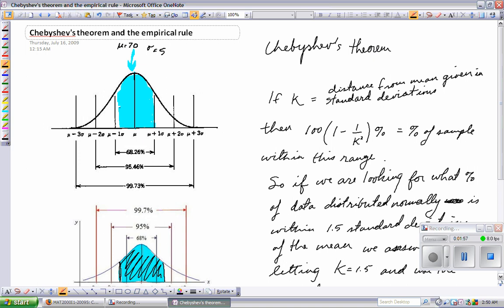We know that the average was 70. One standard deviation away from 70 in the positive direction is 75. Another is 80. Another one is 85. Going back the other way, we have 65, 60, and 55.